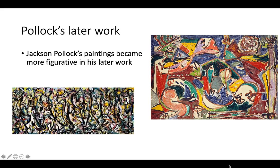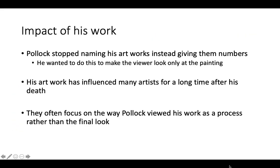Later on in his career, Jackson Pollock's paintings became more figurative and would talk about something, explain something, or have a meaning behind them. Pollock stopped naming his artworks and instead started giving them numbers — so instead of calling a painting the Mona Lisa, he would call it number three, for example. He wanted to do this to make the viewer focus entirely on the painting itself.